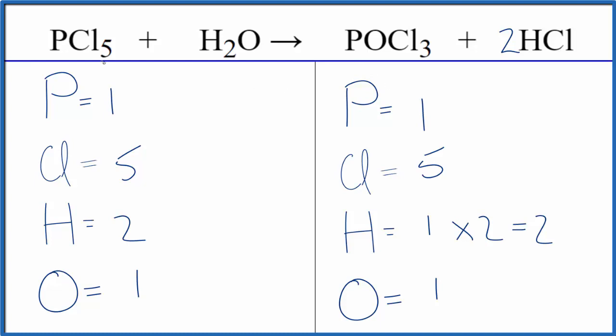This is Dr. B with the balanced equation for PCl5 plus H2O yields POCl3 plus HCl. Thanks for watching.